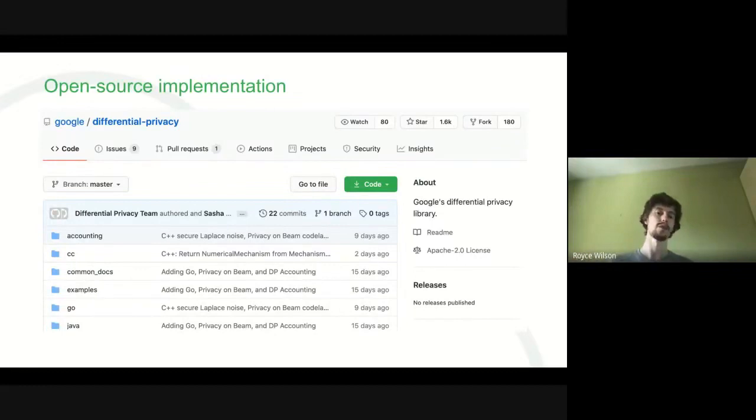We also have an implementation for privacy on Beam. Apache Beam is a distributed aggregation framework. And our library here uses the exact same privacy model that I was just talking about both in this talk and in our paper. So go take a look at that too. We have a bunch of documentation and code lab and testing all uploaded in this repo. There's a lot of great resources to refer to here.